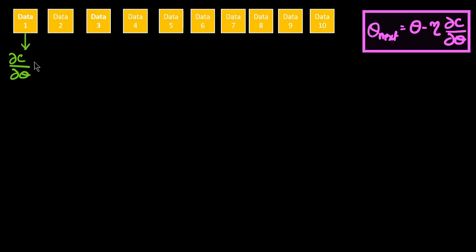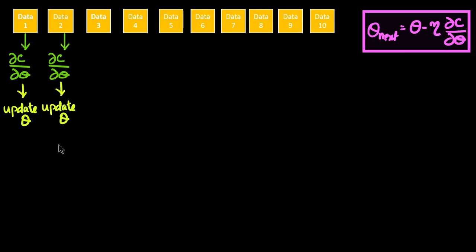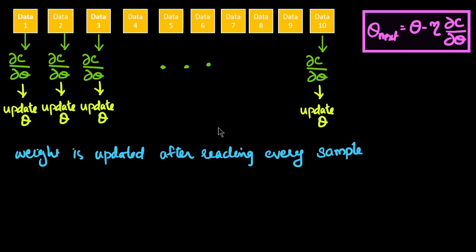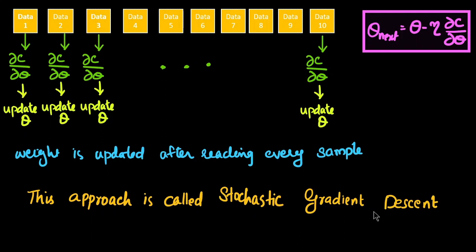In the second method, stochastic gradient descent, we find the derivative of the first data point and immediately substitute it into the equation to update theta. Then using that updated theta, we find the derivative with respect to the second data, and so on. The weight is updated after reading every sample, so we need not memorize these derivatives.